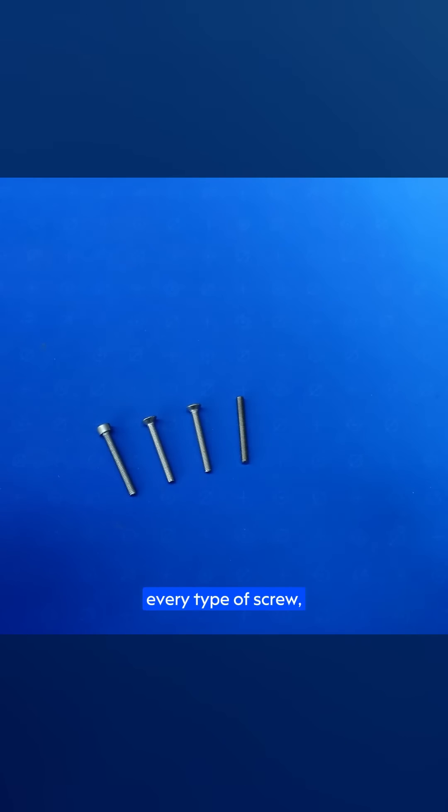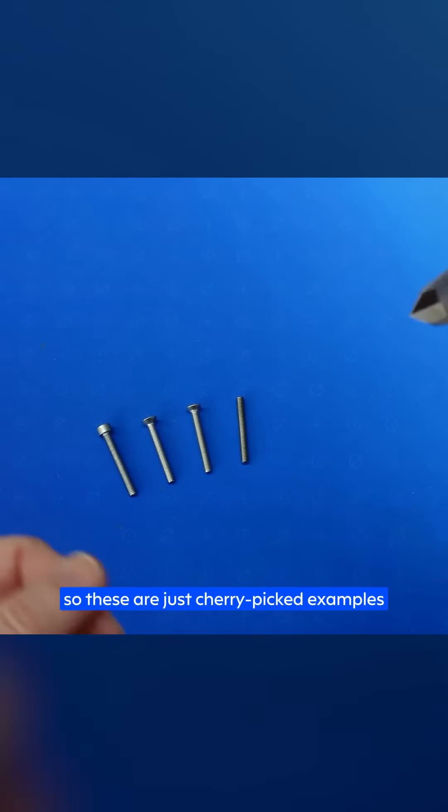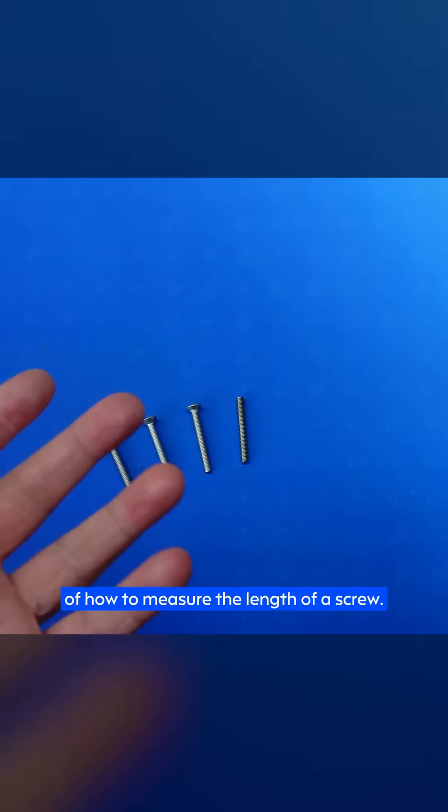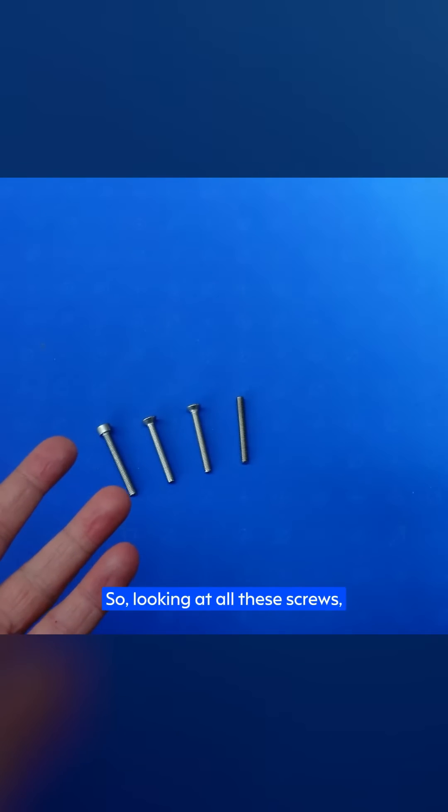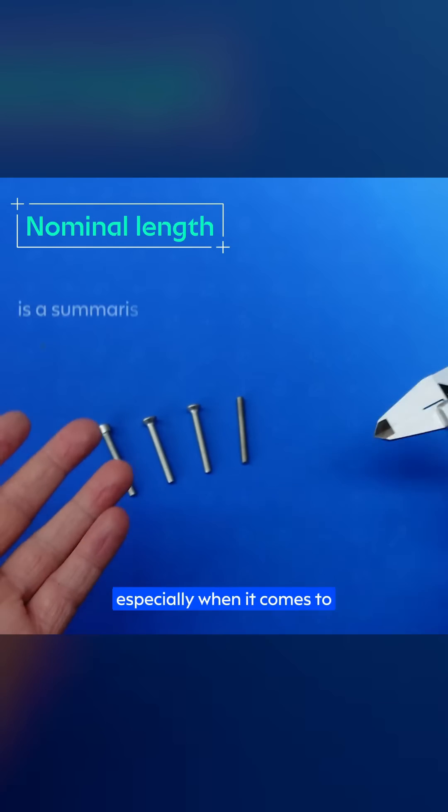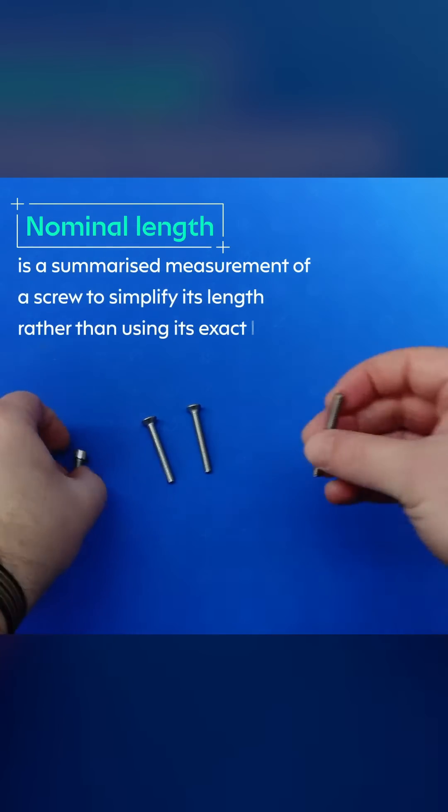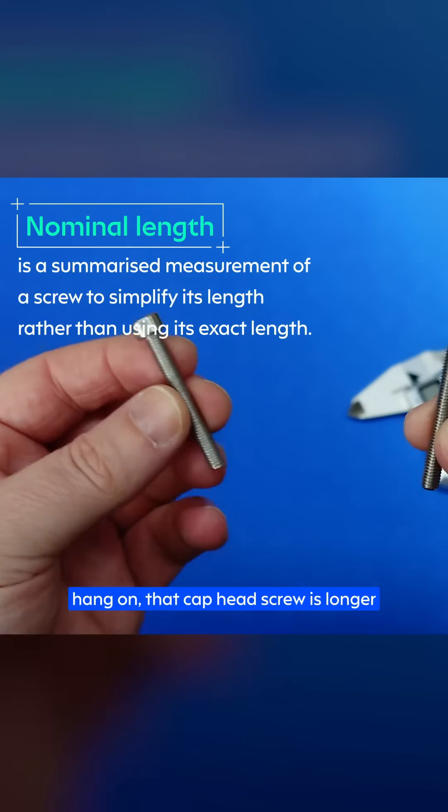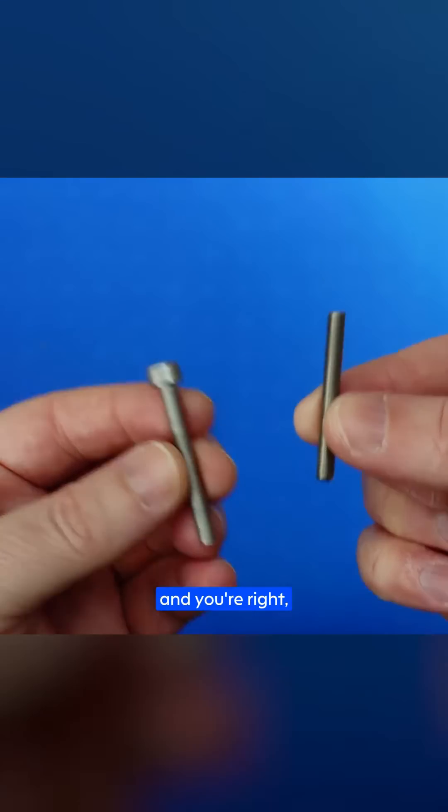Now we're not going to go through every type of screw just because we'd be here all day, so these are just cherry-picked examples because they help reinforce the theory of how to measure the length of the screw. Looking at all these screws, these are all the same nominal length, especially when it comes to ordering them. Now you're thinking, hang on, that cap head screw is longer than the grub screw overall, and you're right.